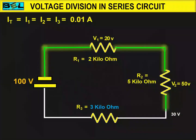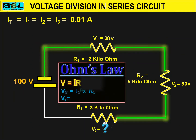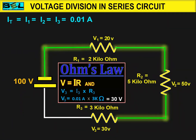Now 30 volts are available at resistor R3. We will find out how many volts will be dropped by R3 resistor with the help of Ohm's law. To find out voltage V3, we take I3 current from the above equation, that is 0.01 Ampere, and the value of resistor R3 from the circuit, that is 3 Kilo ohms. By multiplying 0.01 Ampere with 3 Kilo ohm resistor, we get 30 volts. So V3 is 30 volts.